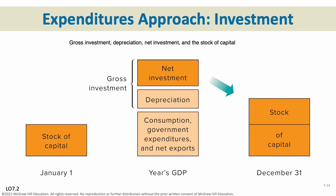Looking at the expenditures approach, a business has gross investment before taking anything out, then depreciation — those capital goods being used up — gets subtracted. For you to have positive investment, depreciation has to be less than net investment: we need to be acquiring more capital goods than we're using up. This will increase our stock of capital goods and grow our GDP.